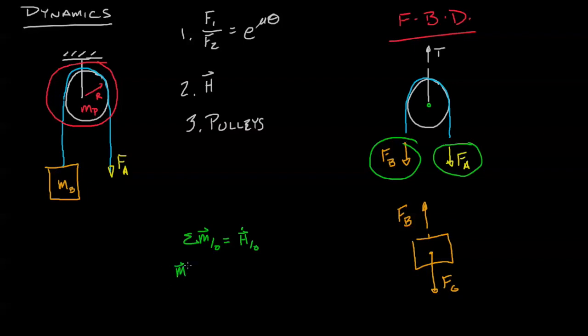That's simply going to be moment A plus moment B. Next, the moment at A is negative RFA plus RFB. And instead of dealing with angular acceleration let's convert that into the acceleration of a point at the edge. So that's A over R.